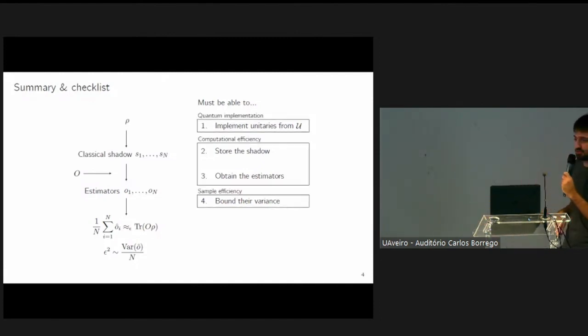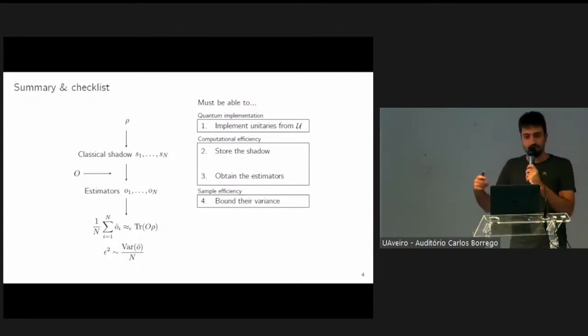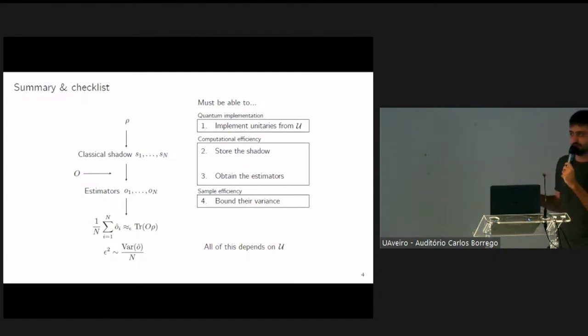So the first one is an issue of quantum implementation. The first point is actually the only quantum part of the whole process, and the rest is all classical post-processing. Point two and three are issues of computational efficiency. These are things that the classical computer must be able to do in order to run the protocol. Finally, the fourth point is an issue of sample efficiency. How many samples do we actually need in order for this epsilon to be as small as we want it to be? Essentially, all of this depends on the choice of this curly U ensemble. The main goal of all of this is to pick a curly U ensemble such that these four points are all well-behaved for the largest possible class of observables and states.